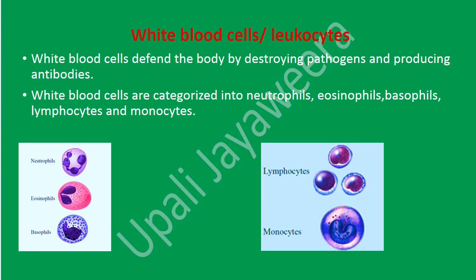Now we will find out about white blood cells or leukocytes. White blood cells defend the body by destroying pathogens and producing antibodies. White blood cells are categorized into neutrophils, eosinophils, basophils, lymphocytes, and monocytes.